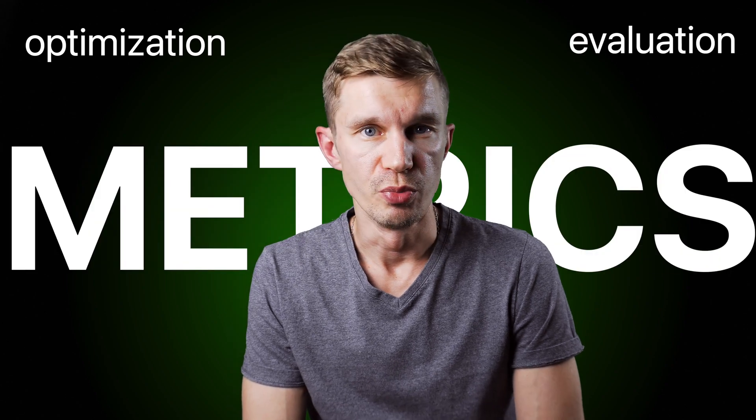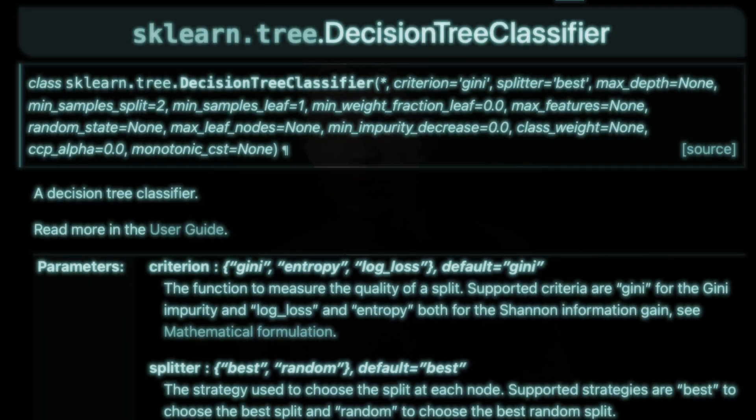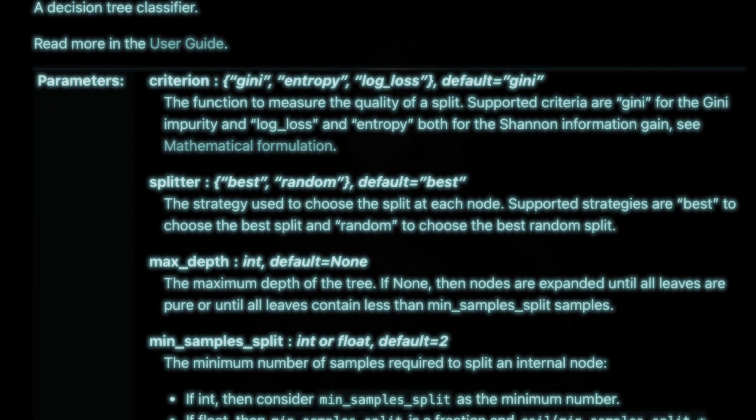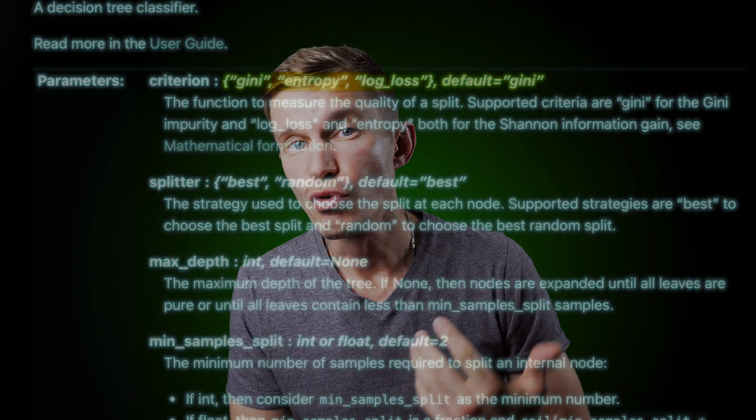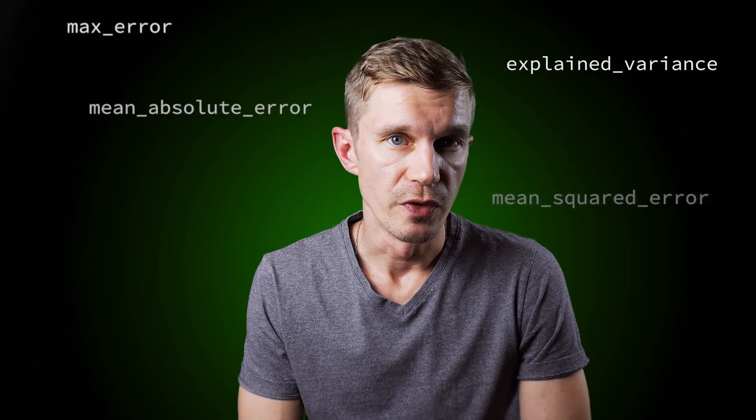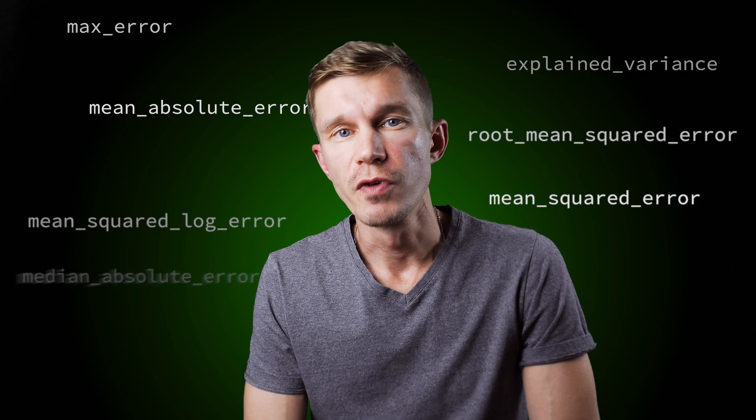Before you do anything, define the optimization and evaluation metrics you'll be using. The optimization metric is a loss function that your model will train to minimize or maximize. It's an easy choice for classification task types because by default most models will optimize cross entropy or log loss — in other words, you shouldn't bother. But for regression jobs, it is crucial to define the optimization function correctly.